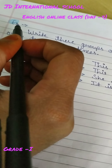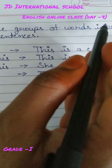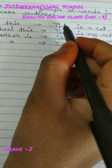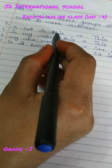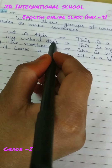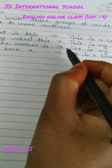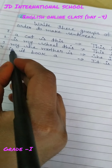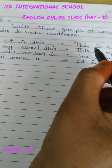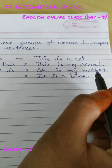Now, examples. Write these groups of words in proper order to make a sentence. 'A cat is this' → proper sentence: 'This is a cat.' 'Is my school this' → 'This is my school.' 'My she mother is' → 'She is my mother.' 'Is it book it' → 'It is a book.' Students, notice that in all proper sentences, the first letter is capital and there is a full stop at the end.